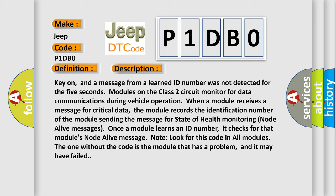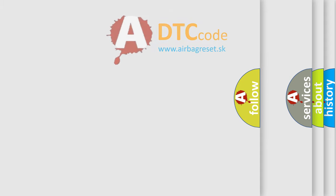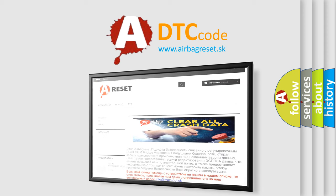This diagnostic error occurs most often in these cases: IPC Class 2 circuit is open, shorted to ground, or to B+; IPC ignition power circuit has a high resistance condition; IPC main ground circuits have a high resistance condition; or the IPC module may have failed and is pulling the circuit low. The airbagreset website aims to provide information in 52 languages. Thank you for your attention and stay tuned for the next video.